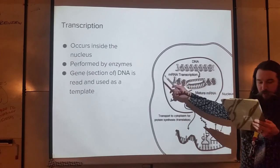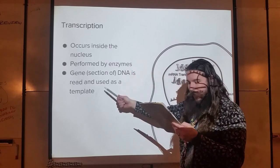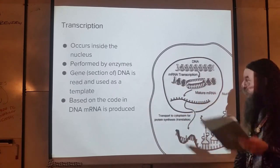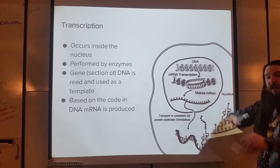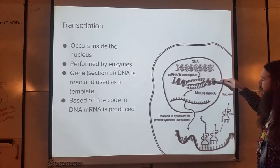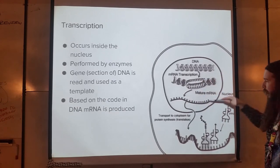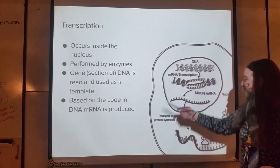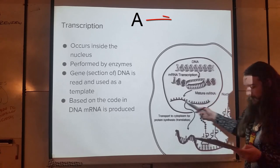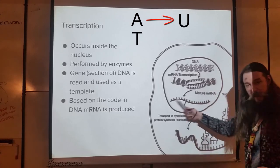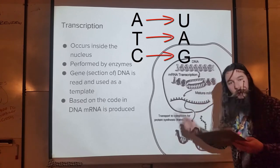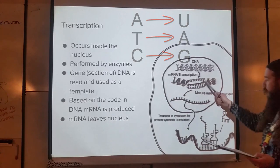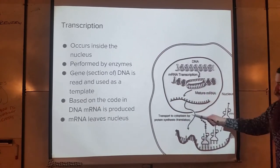During transcription, a segment of DNA called a gene is read and used as a template. While the DNA is read, the mRNA code is being produced. The DNA is double-stranded, so first it needs to unzip, then the enzymes hop on and make mRNA using base pairing rules. There's no T in mRNA — anytime the DNA has an A, it pairs with a U in mRNA; T still pairs with A, and C still pairs with G. Since mRNA is single-stranded, it's small enough to leave the nucleus.